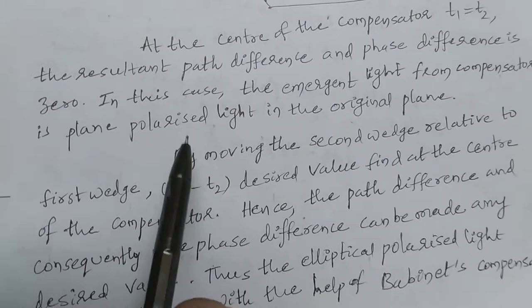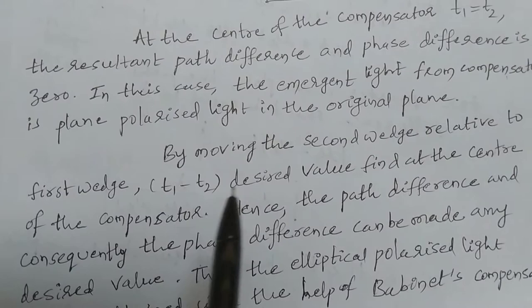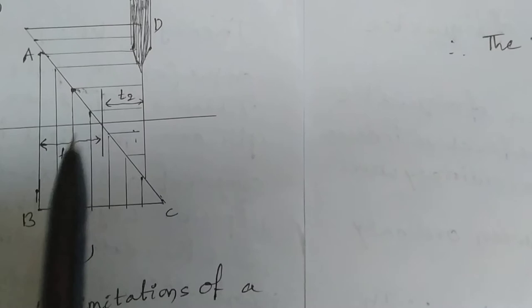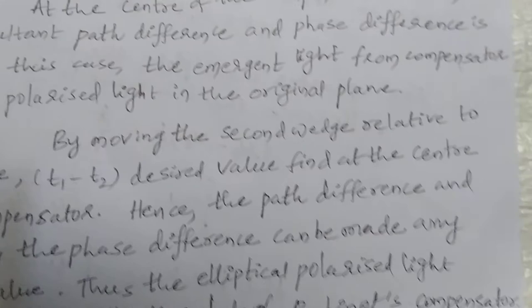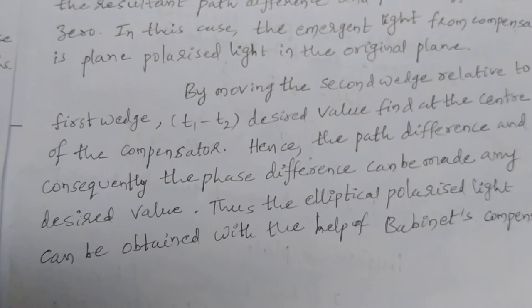By moving the second wedge relative to the first wedge, the value of (t1 − t2) can be set to any desired value at the center of the compensator. One wedge is fixed and the other is moved by the micrometer screw. By calculating t1 and t2 and substituting into the equation, the desired path difference or phase difference can be obtained, allowing elliptically polarized light to be produced using the Babinet compensator.